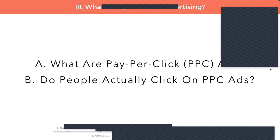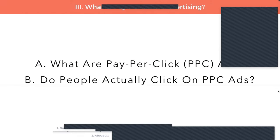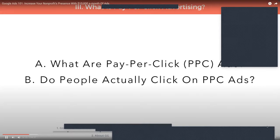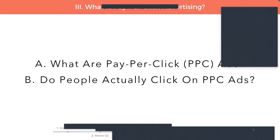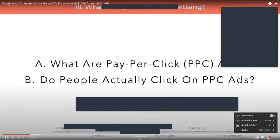Thanks, Lily. We always ask this question because sometimes the $10,000 sounds like so much that people think it's per year or one time. It's really important to understand it's per month — that's a large part of the value of the program, that they give you such an immense amount to work with. Now we want to give you some background on what's called pay-per-click advertising. You need to understand this to understand how the grant actually works.